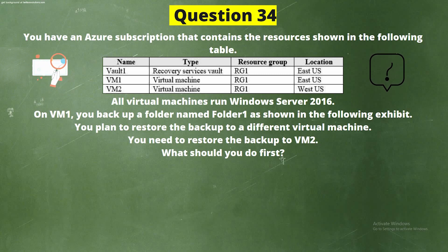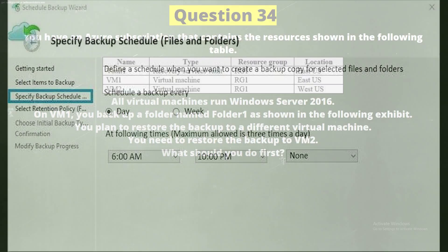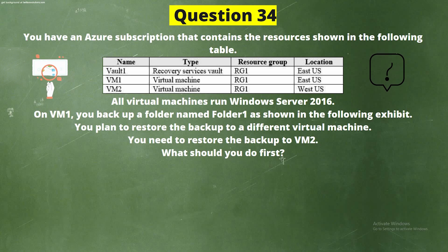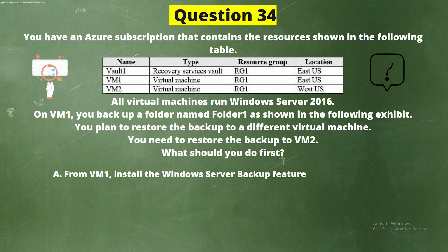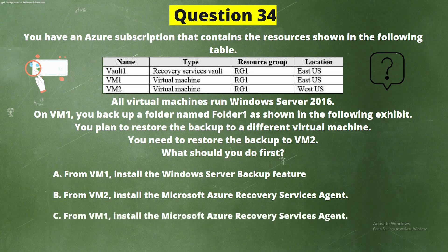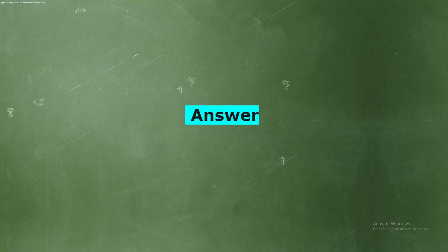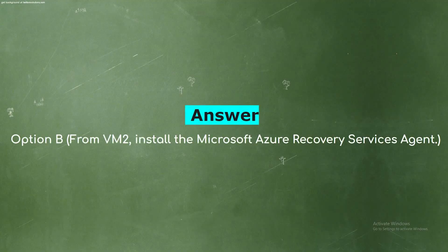Question 34: You have an Azure subscription that contains the resources shown in the following table. All virtual machines run Windows Server 2016. On VM1, you back up a folder named Folder1. You plan to restore the backup to a different virtual machine. You need to restore the backup to VM2. What should you do first? Option A: From VM1, install the Windows Server Backup feature. Option B: From VM2, install the Microsoft Azure Recovery Services agent. Option C: From VM1, install the Windows Server Backup feature. The correct answer is Option B: From VM2, install the Microsoft Azure Recovery Services agent.